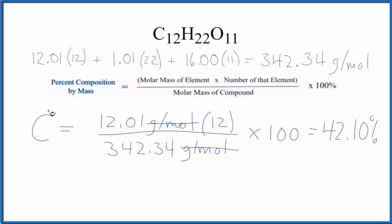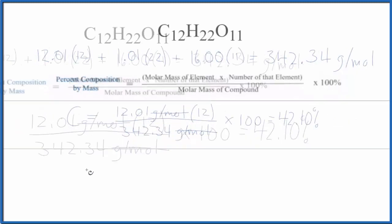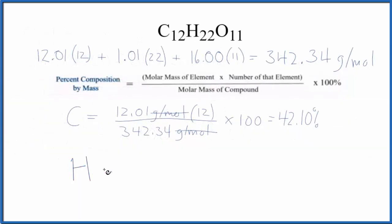Let's do this for the hydrogen and then oxygen. For the hydrogen, hydrogen on the periodic table, 1.01 grams per mole. I'm not going to write that, it's just going to cancel out. And then we have the number of that element, 22 hydrogen atoms. Divide by the molar mass of the compound. Multiply by 100. We end up with 6.49%.